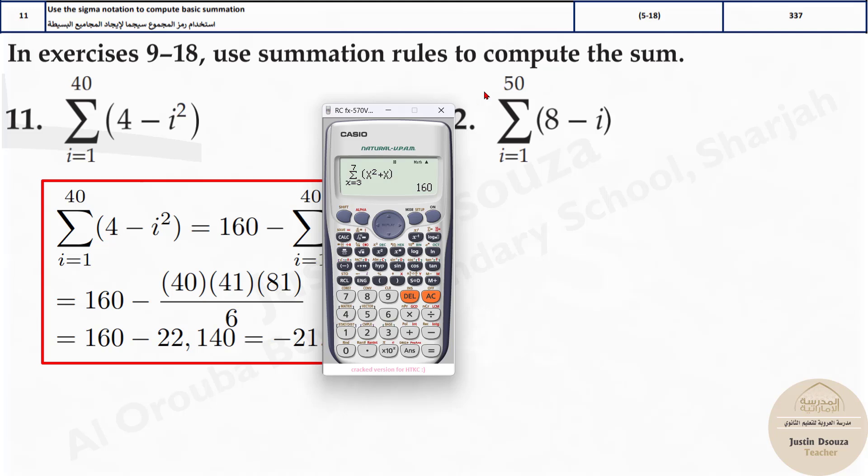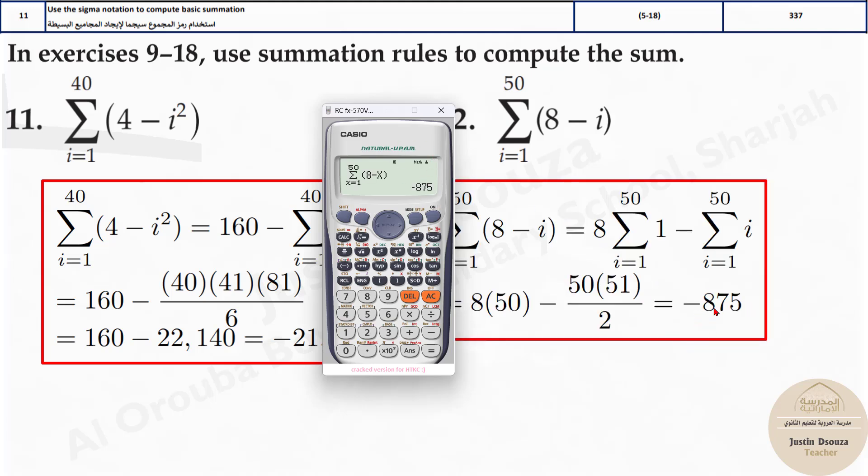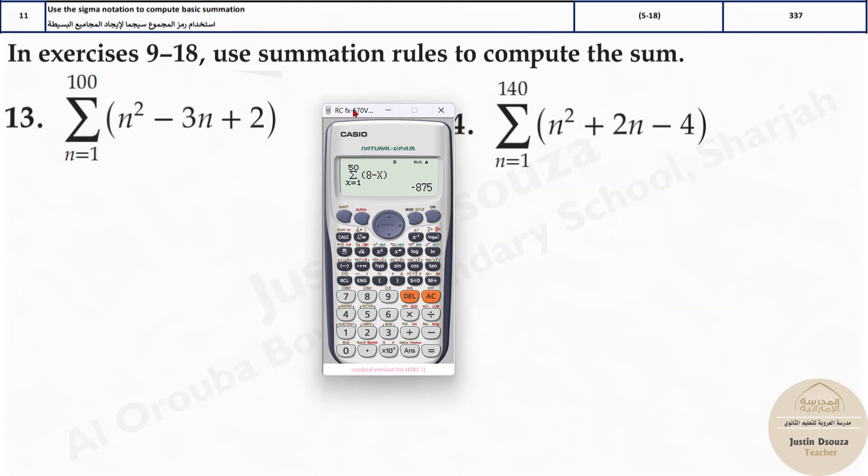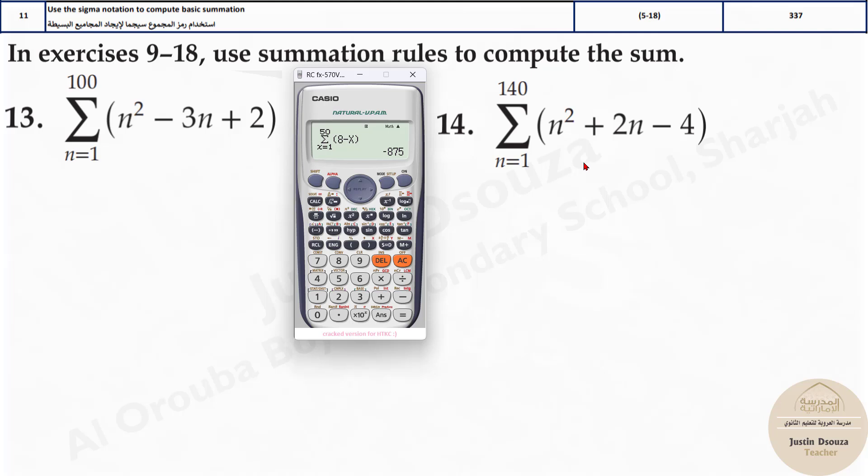Let's just try this one as well because it's a huge number. It is 8 minus x. It starts from 1 and goes up until 50. It might take some time and the answer is minus 875. So, that's it. Sometimes it might take about 30 seconds, 12 seconds.